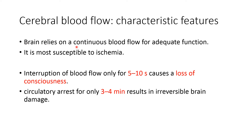The brain relies on continuous blood flow for adequate function. For energy, the brain requires blood glucose. During prolonged starvation, the brain can utilize some amino acids. Blood glucose enters the brain through glucose-linked unit transporters on cerebral capillaries, and for this the brain does not require insulin. The brain is most susceptible to ischemia; interruption of blood flow for only 5 to 10 seconds causes loss of consciousness, and circulatory arrest for only 3 to 4 minutes results in irreversible brain damage.